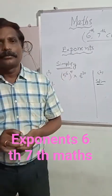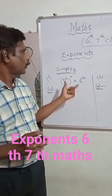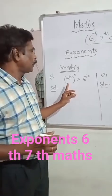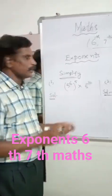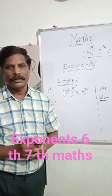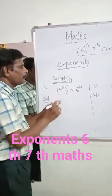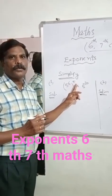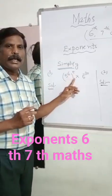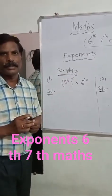Simplify. How to simplify exponents. The first problem is 5 power 6, whole power 5, into 5 to the power of minus 30. The first step: it is in the form of a to the power of m, whole to the power of n. So a to the power of m, whole to the power of n, equals a to the power of mn — multiply the powers.